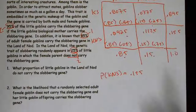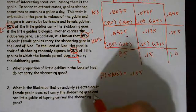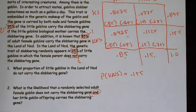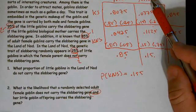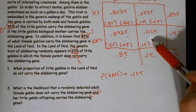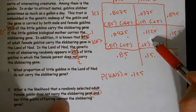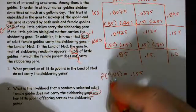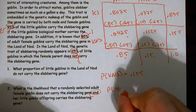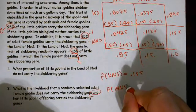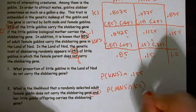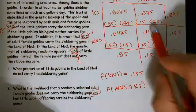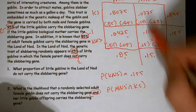What's the likelihood that a randomly selected adult female does not carry the gene and her little goblin offspring also does not carry it? 'And' means intersection. So we want the probability of mom not slobbering and kid slobbering — that intersection is right in the table.